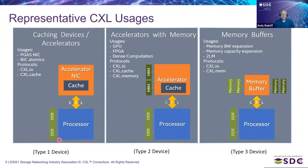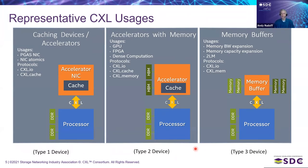From the CXL website, there are representative use cases known as a Type 1 device, a Type 2 device, or a Type 3 device. Type 1 and Type 2 are accelerators of different types, and we're not going to talk about those much today. We're going to concentrate on a Type 3 device, which is about adding more memory to the system — a processor with a CXL bus and a memory buffer device presenting system main memory available to general-purpose programs.